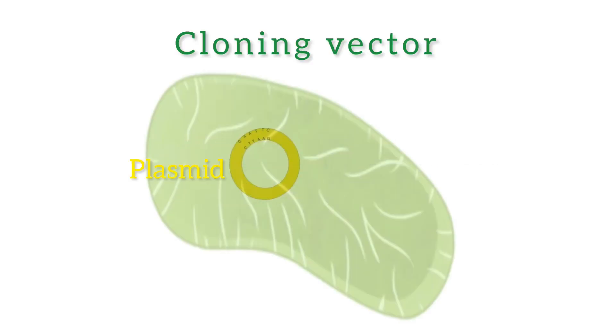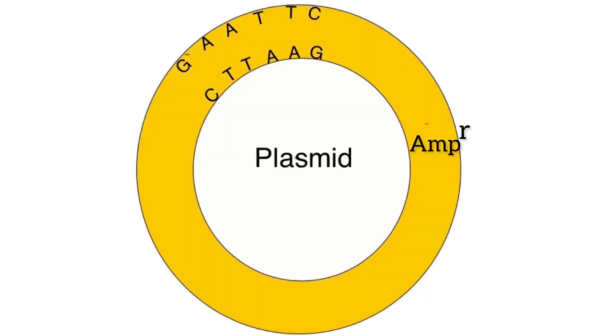Cloning vectors are like vehicles to transfer the genome of one organism into another organism. Plasmids are very extensively used as cloning vectors. A plasmid is an extranuclear or extrachromosomal, self-replicating, double-stranded circular DNA of bacteria.